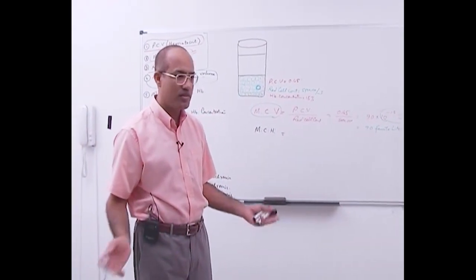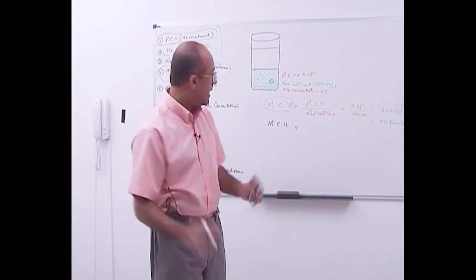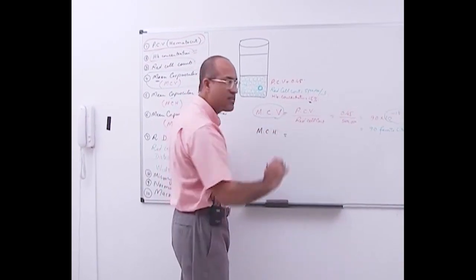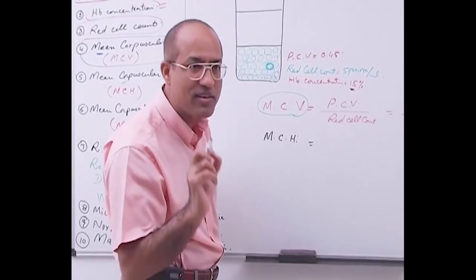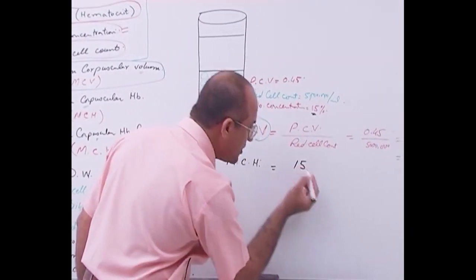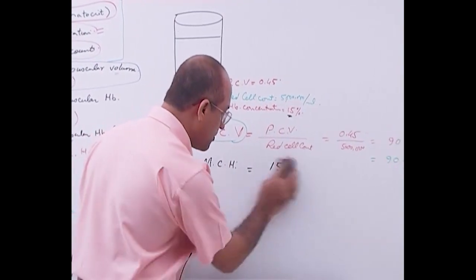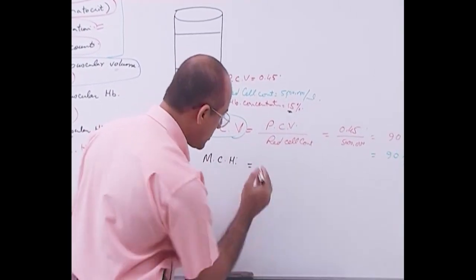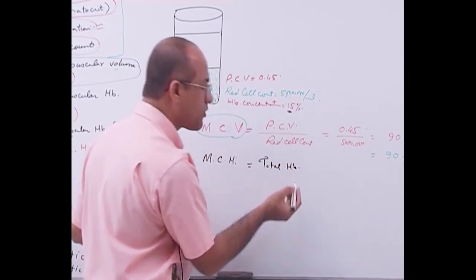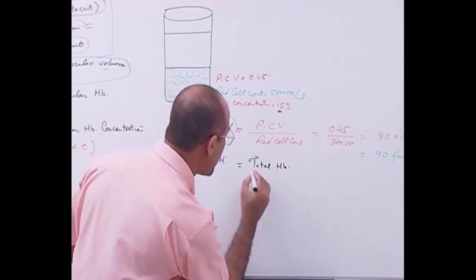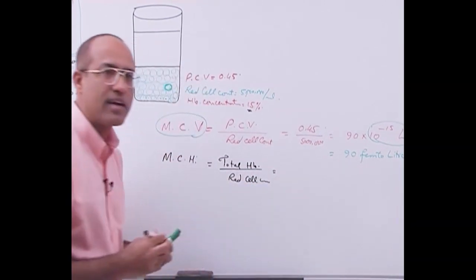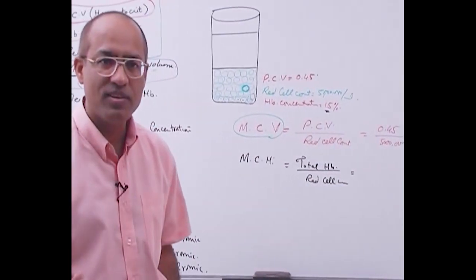Again, if you have the basic values, you can derive it. For mean corpuscular hemoglobin - the amount of hemoglobin present in one corpuscle - we are talking about amount, not volume. The formula is: total amount of hemoglobin divided by the number of RBCs. Total hemoglobin concentration divided by red cell count gives you the amount of hemoglobin per RBC.